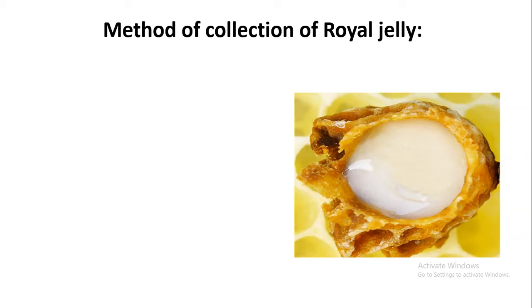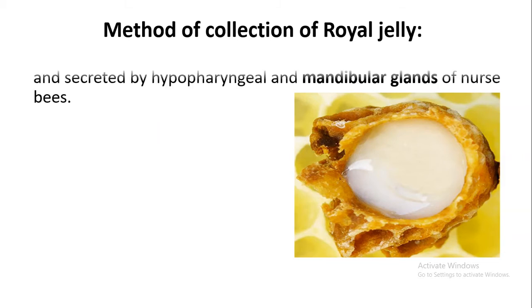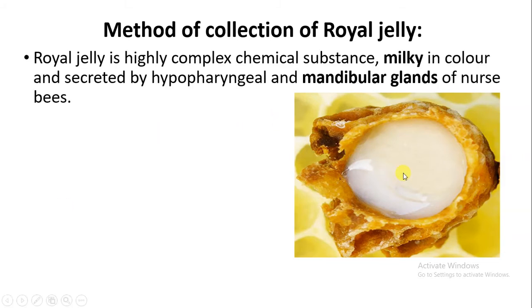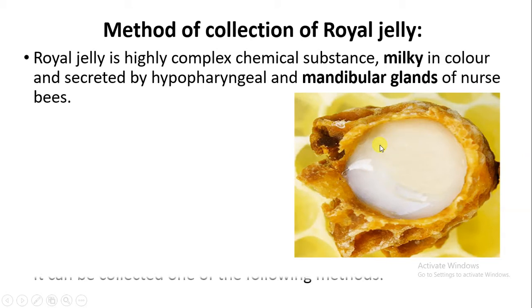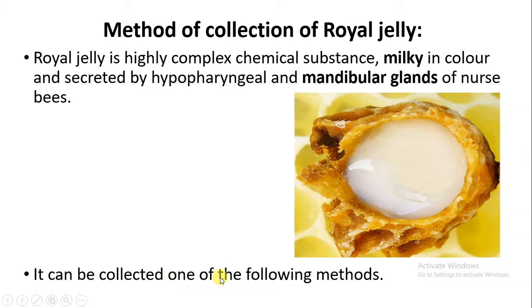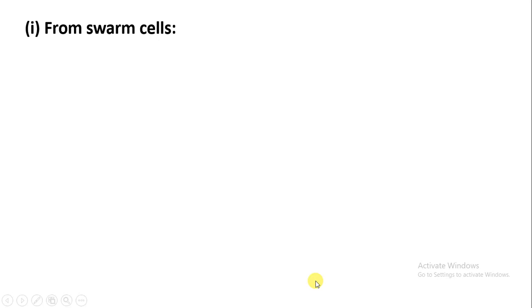Now we will study about the method of collection of royal jelly. Royal jelly is a complex chemical substance with a milky color, secreted by the hypopharyngeal and mandibular glands of the worker bees, also called nurse bees. We will study some of the methods by which we are able to collect the royal jelly.